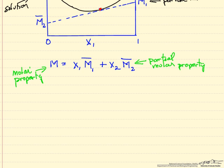Starting with the definition: the property of the mixture, some state function M, is equal to the mole fraction of component one times the partial molar property of component one, plus the mole fraction of component two times the partial molar property of component two. We take partial molar properties and weight them by the mole fraction to get the property of the mixture.